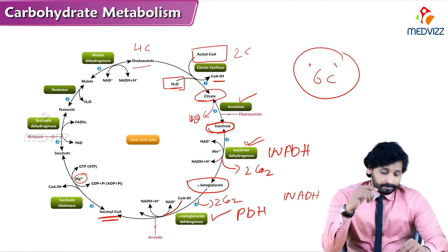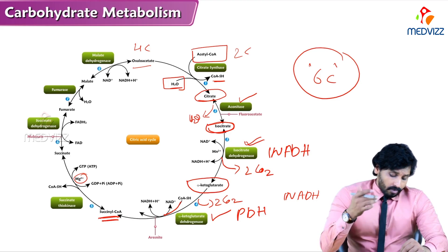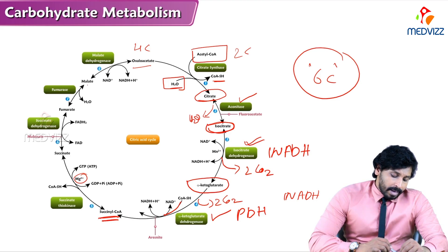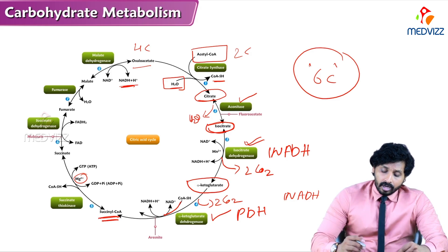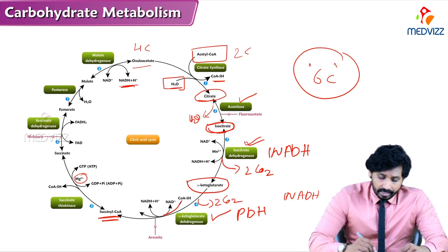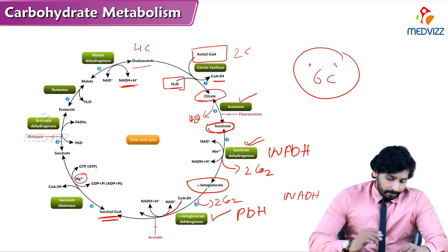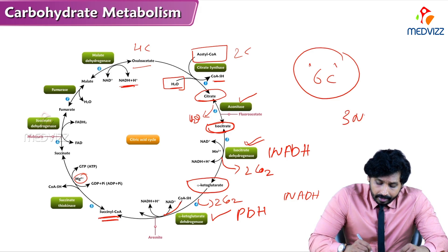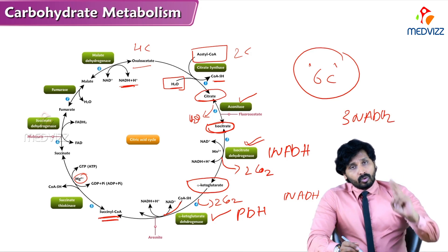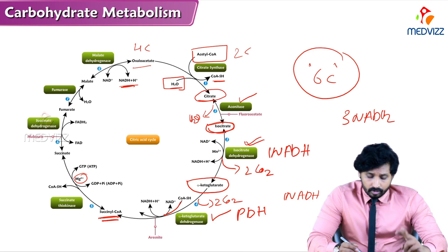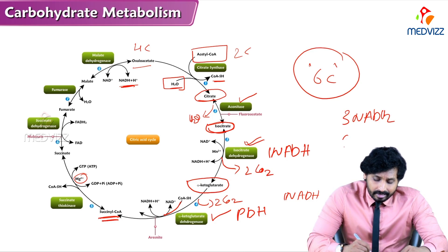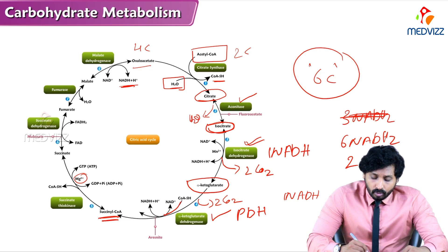Fumarate is converted to malate by the enzyme fumarase, which removes a water molecule. Malate is then converted to oxaloacetate by malate dehydrogenase, generating NADH2. In total, 3 NADH2 are generated per cycle. Since 2 acetyl-CoA molecules enter the TCA cycle per glucose molecule, that means 6 NADH2 are produced overall.